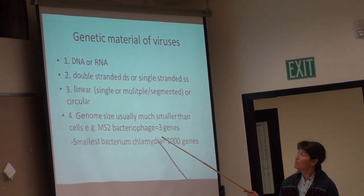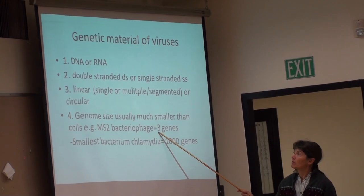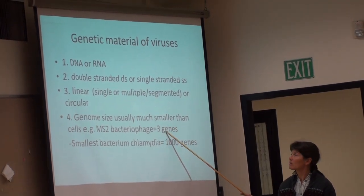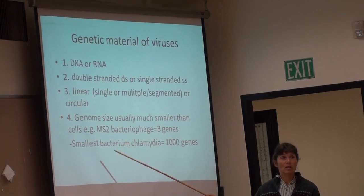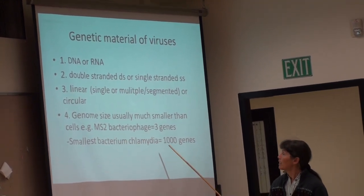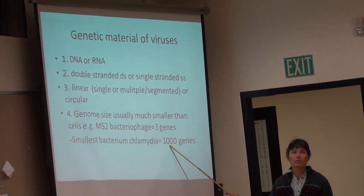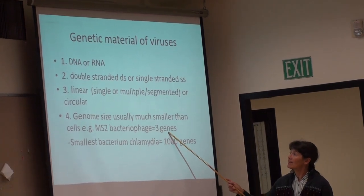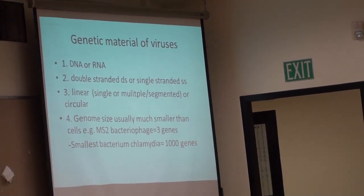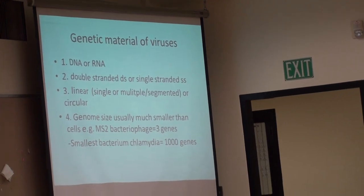A bacterial virus — the MS2 bacteriophage — has genetic information encoding only three proteins, so it has just three genes. In contrast, one of the smaller bacteria, Chlamydia, still has genetic information for a thousand different proteins — a thousand genes. This lack of genetic information is one reason why viruses must invade cellular organisms and use their biosynthetic machinery to replicate themselves.